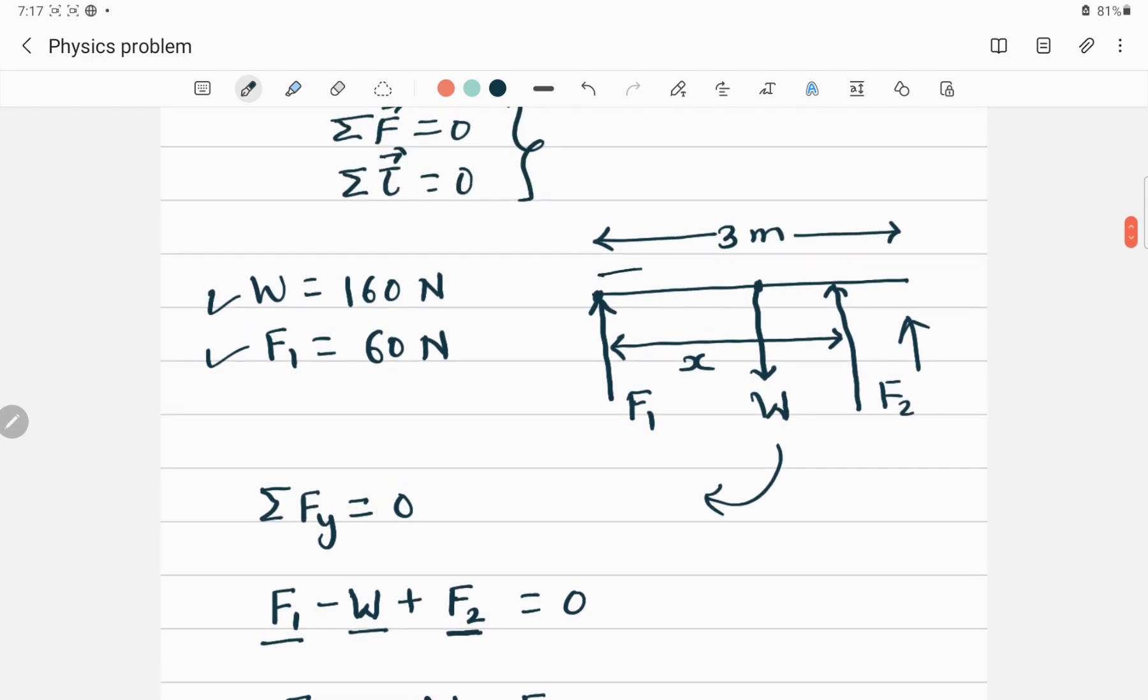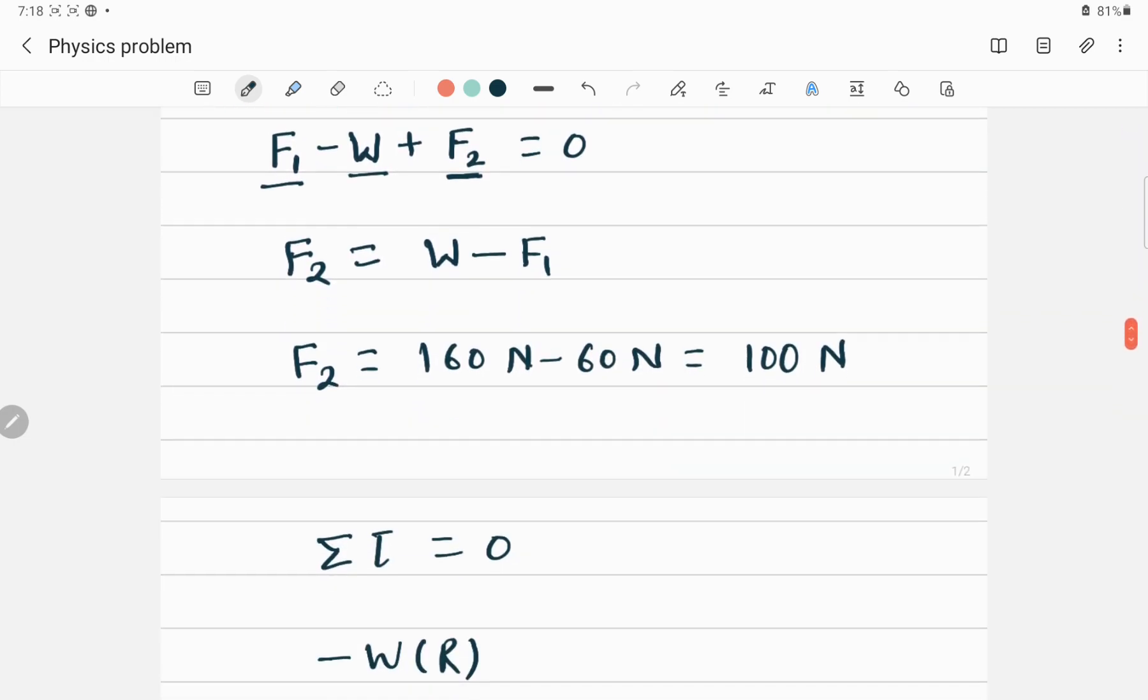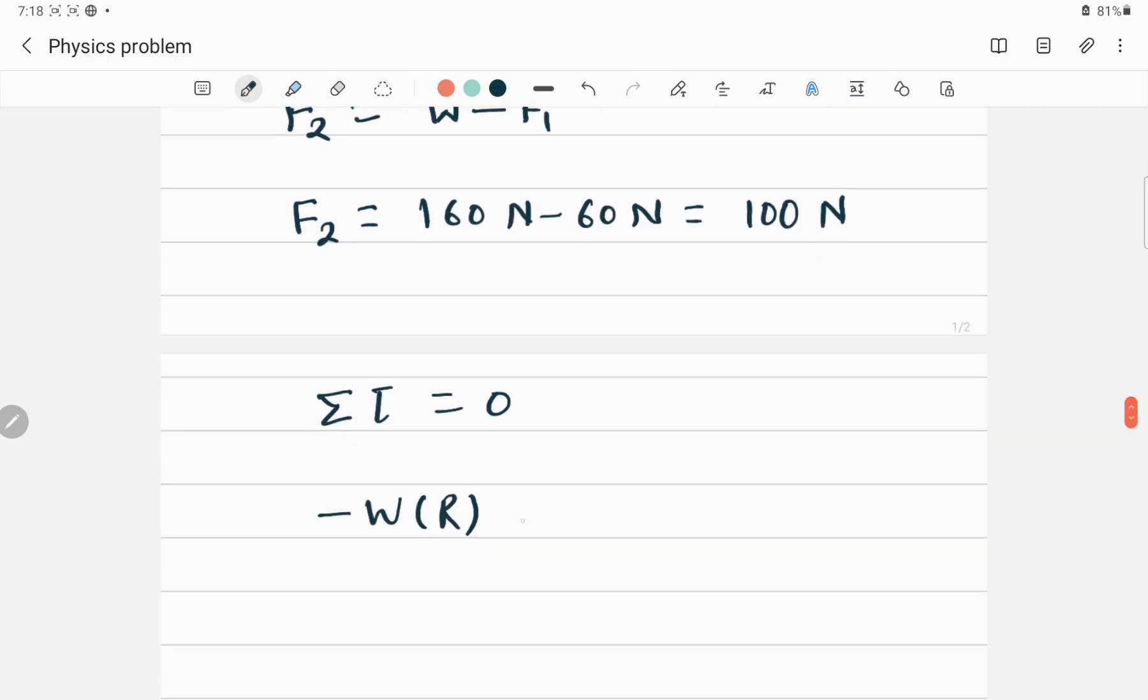Because center of mass is, weight is acting through this center of mass or center of gravity. This is the uniform board. So this distance R will be 1.5. Because total length of this wooden board is 3 meter, half of this one is 1.5 meter. Later on, we will insert a value. Right now, just write down like R plus.